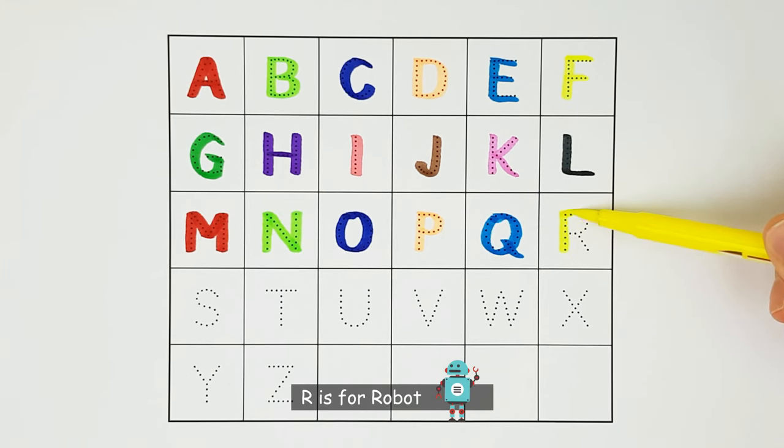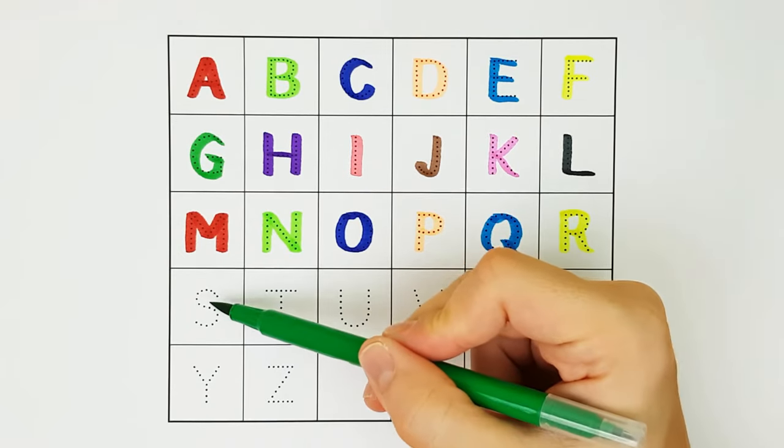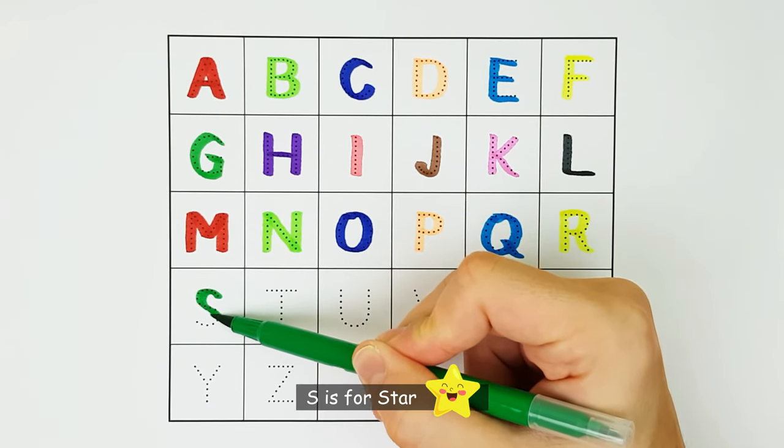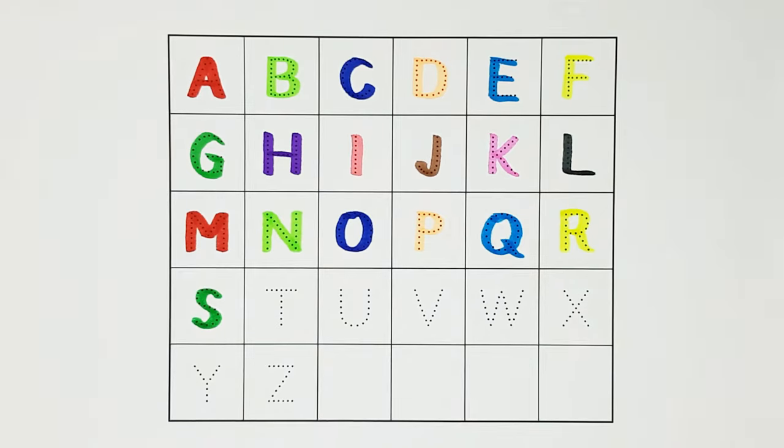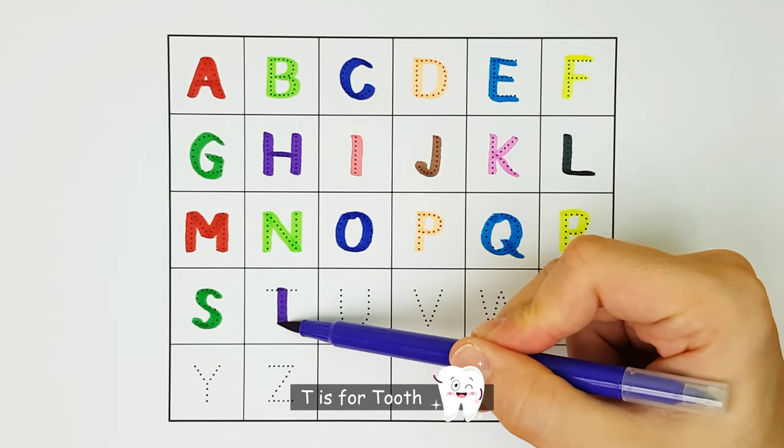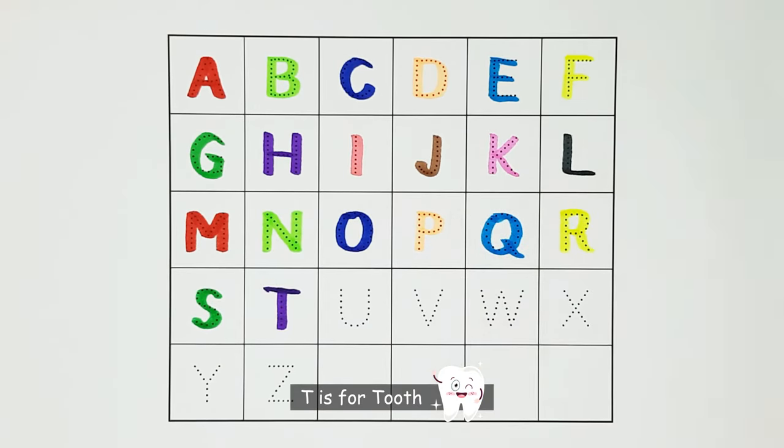R. R is for robot. R. S. S is for star. S. T. T is for tooth. T.